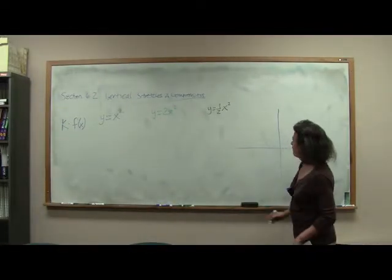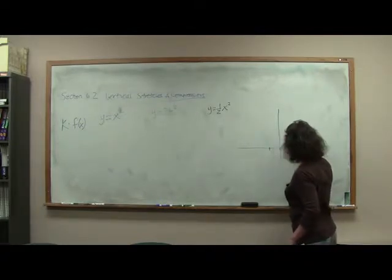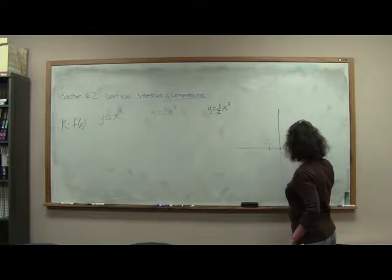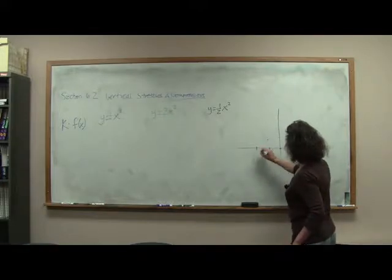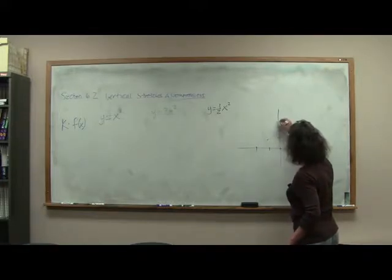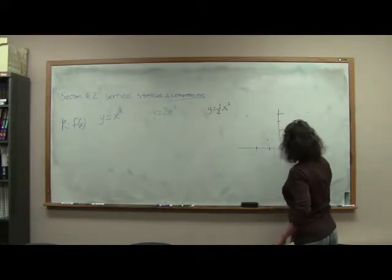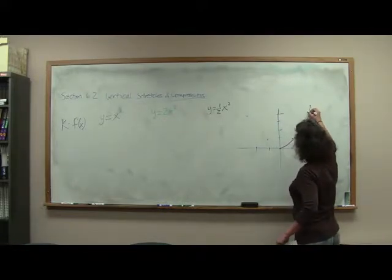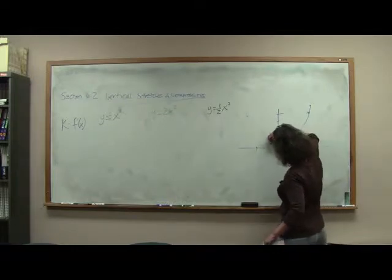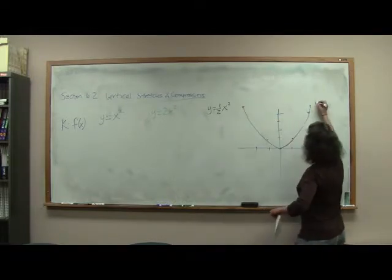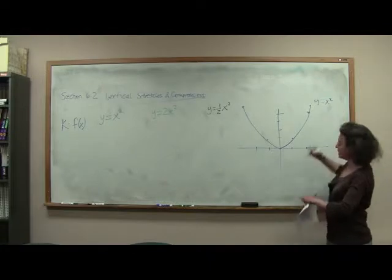So if I graph y equals x squared, I am going to plot some points. And then, we're at 2, negative 2, 1, 2, 3, 4. Or, I can't even connect my own dots. Alright, so here's our graph y equals x squared.